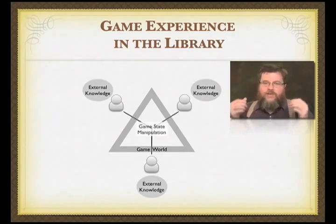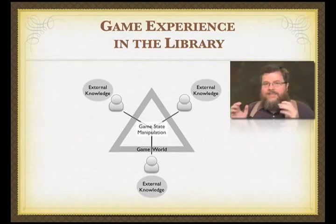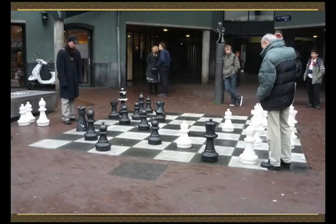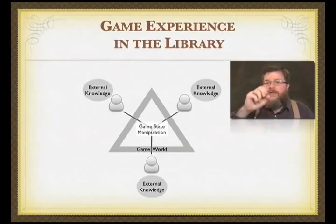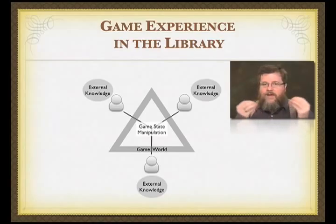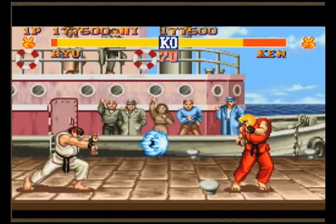Players interact with each other through manipulating something we call the game state. The game state is the way that we visualize the game. In a board game, when you see the board and all the pieces, that's the game state. In chess, I interact with you by moving a piece — by changing the game state — and then you interact with me by moving a piece and changing the game state. That's how we interact back and forth. In a video game, the game state changes at 24 frames per second, making the game state update constantly.